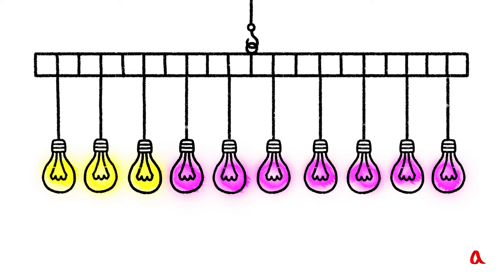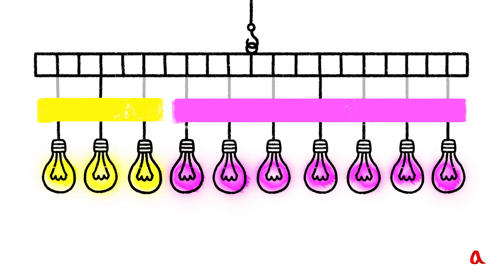We attach the loads within a group to a plank and then cut off all the threads except the central one. Both the main lever and the new ones are still in equilibrium.